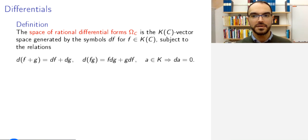Let us now look into differentials. This is the second ingredient that we will need for the Riemann-Roch theorem. Now we will define what the space of differential forms is. So the space of rational differential forms, ω_C, on the projective irreducible curve C, that is the K_C vector space generated by symbols df, so abstract symbols.